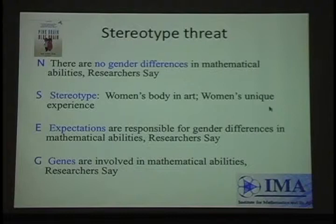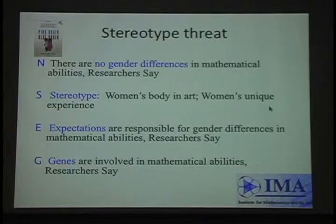One group read that there are no gender differences between men and women in math ability. Another group read something about women's bodies in art. A third group read that women can do just as well in math as men, but teachers expect they won't, so they don't do as well through school. A fourth group read that women aren't as good in math because researchers have discovered a genetic explanation. They had a math test, then read the article, and then wrote the math test again.